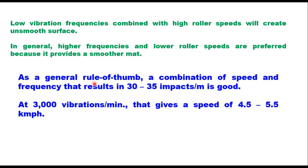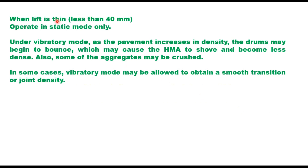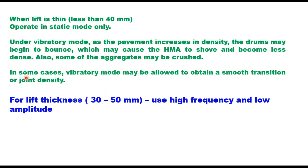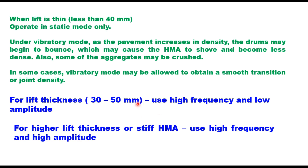As a general rule of thumb, a combination of speed and frequency that results in 30 to 35 impacts per meter is good. At 3000 vibrations per minute, this gives a speed of 4.5 to 5.5 km/h. When layer thickness is thin — less than 40 mm — operate in static mode only. In vibratory mode on thin lifts, as the pavement increases in density, the drums may begin to bounce, causing the HMA to shove and become less dense, and some aggregates may be crushed. However, vibratory mode may be allowed in some cases to obtain a smooth transition or joint density. When lift thickness is 30 to 50 mm, use high frequency and low amplitude. When thickness is more than 50 mm or you have a stiff HMA, use high frequency and high amplitude.